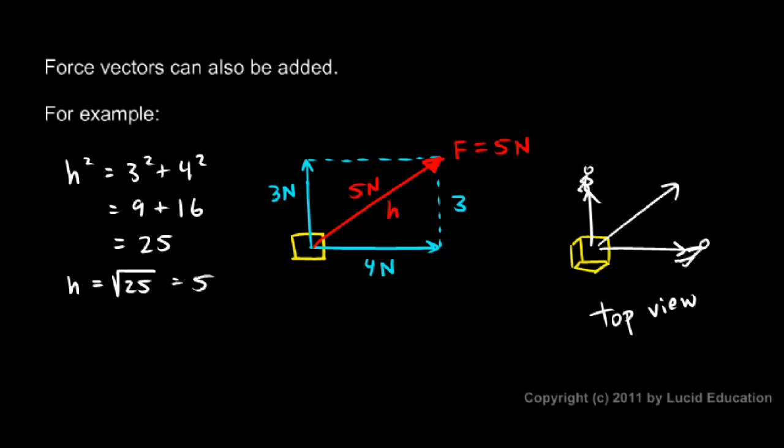So again, don't think of this as three vectors. Think of this as two vectors: the 3 newton force and the 4 newton force. Those two vectors combined have the same effect as this 5 newton force in this direction. You could think of either the 3 and 4 newton forces acting together, or this 5 newton force acting in this direction.